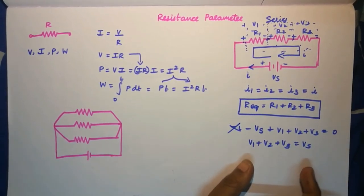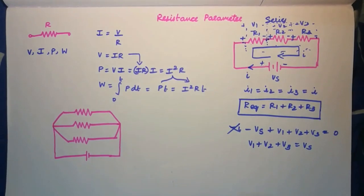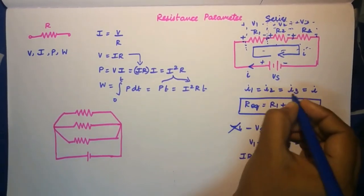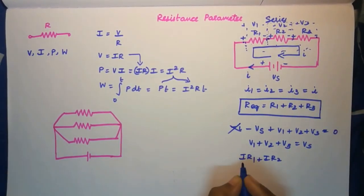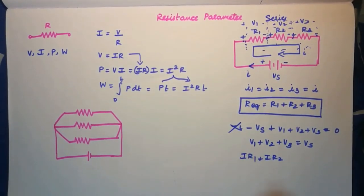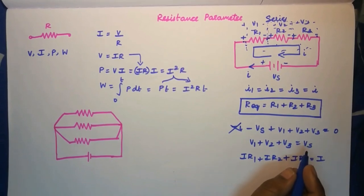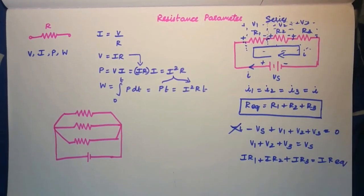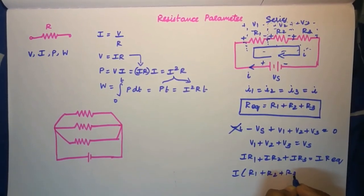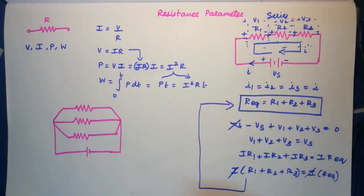Now substituting V1 = IR1, V2 = IR2, and V3 = IR3 — using I throughout since I1 = I2 = I3 = I in a series circuit — we get I·R1 + I·R2 + I·R3 = Vs. The total current I equals Vs / R_eq, so taking I common on both sides and cancelling, we confirm R_eq = R1 + R2 + R3.